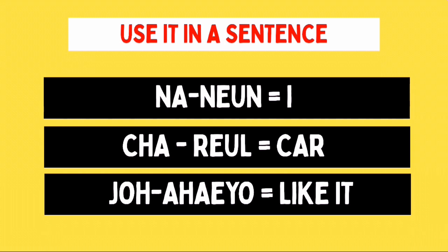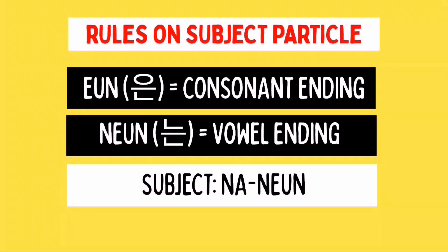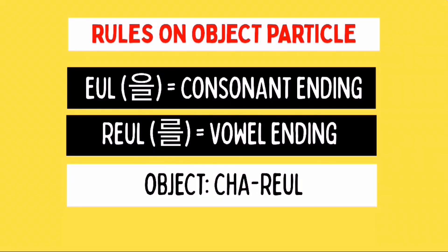First of all, na or ay is the subject and nun is just a subject particle. The rules on subject particle are: if the subject has a consonant ending, we will add un; but if the subject has a vowel ending, we will add nun. Since our subject is na and it has a vowel ending, we will be adding nanun. The next part of the sentence is charul. Cha is an object and rul is just an object particle. Since our object cha has a vowel ending, we will be adding rul, so it's cha rul.